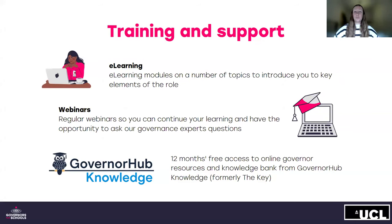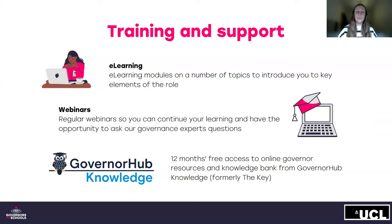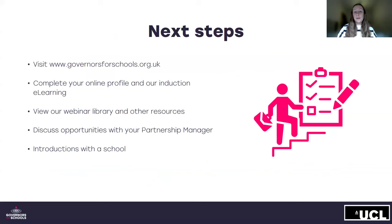At Governors for Schools, we want to do more than just place you in a school — we want you to be effective in your governor role as quickly as possible. Therefore, we have a range of free e-learning modules on a number of topics to introduce you to the key elements of the role. We also hold regular webinars so you can continue your learning and ask our governance experts questions. Once you have been placed at a school, you will be given 12 months free access to the online Governor Resource and Knowledge Bank from Governor Hub Knowledge, formerly known as the Key. In England and Wales, all new governors can access free training opportunities through their local authority or multi-academy trust, which will be organised through the school.